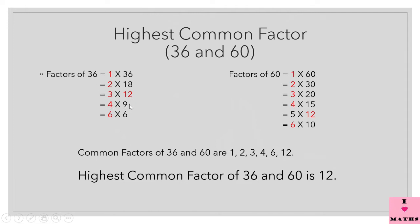4 × 9 = 36, so 4 and 9 are factors of 36. Now we have to check the tables only between 4 and 9, so we check 5, 6, 7 and 8. Only 6 appears in the 6 times table: 6 × 6 = 36, so 6 is also a factor of 36.